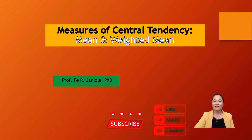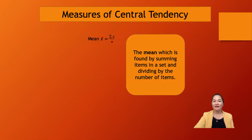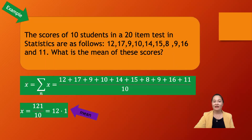Measures of central tendency refers to the center of all the data set. The mean is the average, with the formula: x-bar is equal to the summation of x over n. The mean is found by summing all the items in a set and dividing by the number of items. Here is an example of how to find the mean.